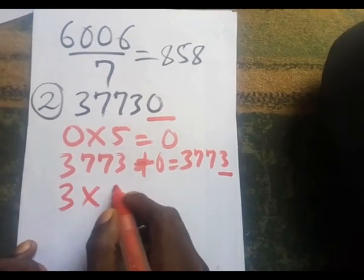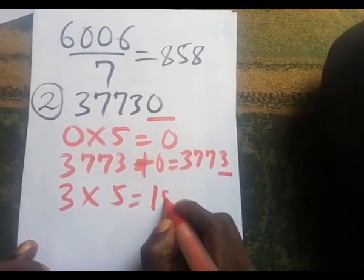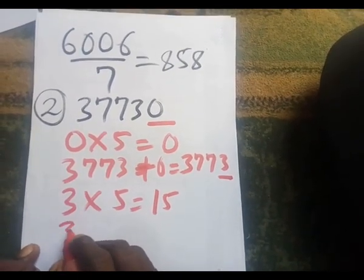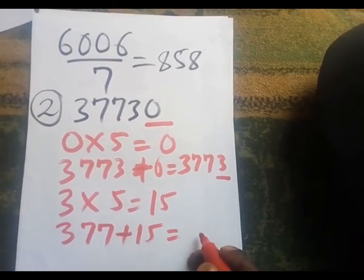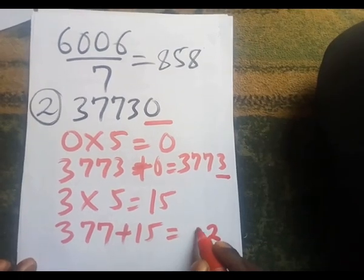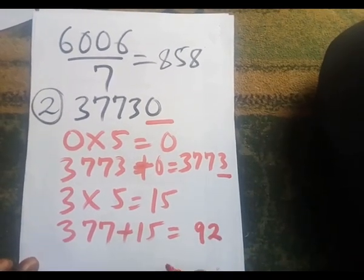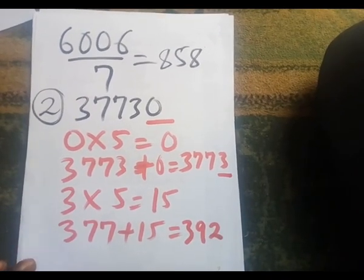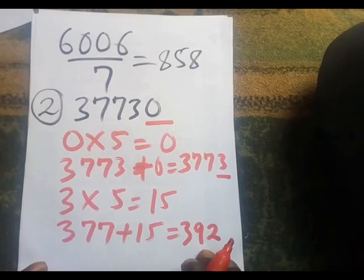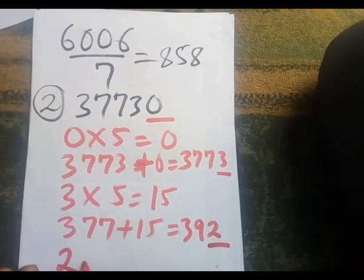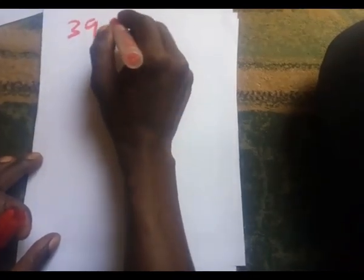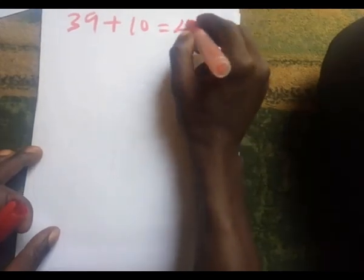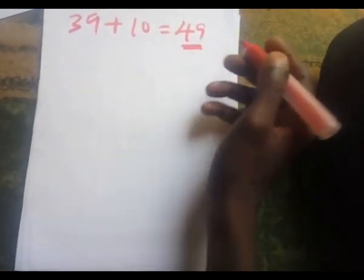Three multiplied by five gives fifteen. We add fifteen to 377, which gives 392. The last digit of 392 is two, so we multiply two by five to get ten. The remaining digits are 39, so we have 39 plus 10, which equals 49.